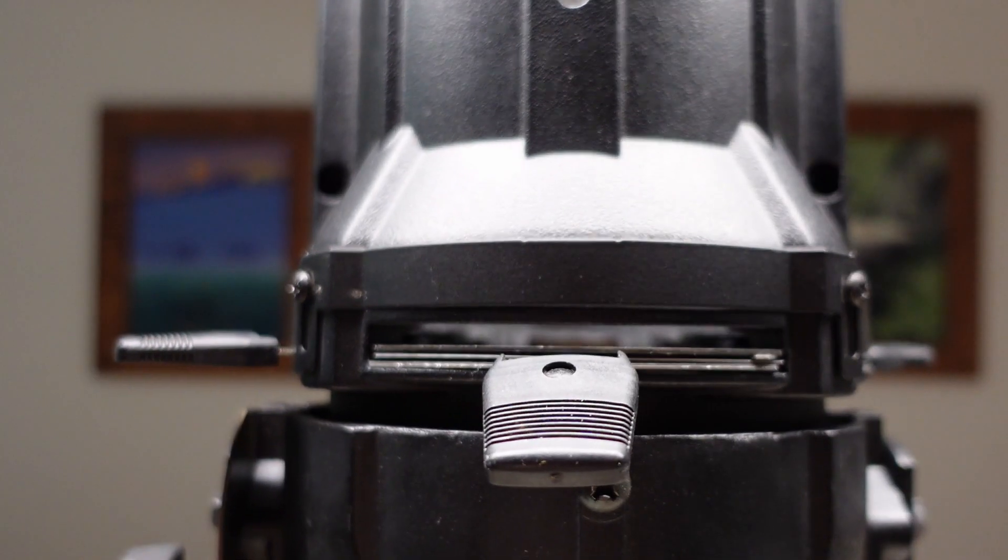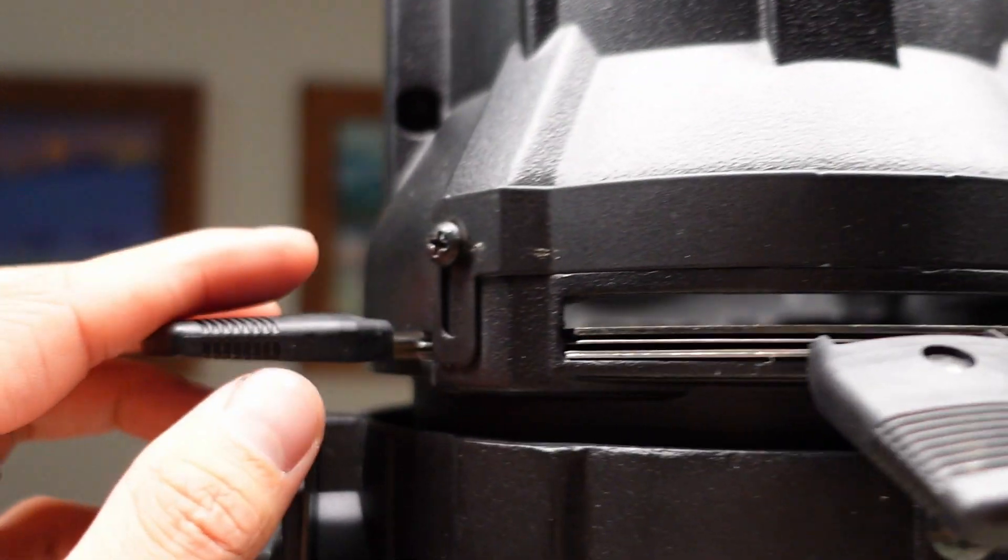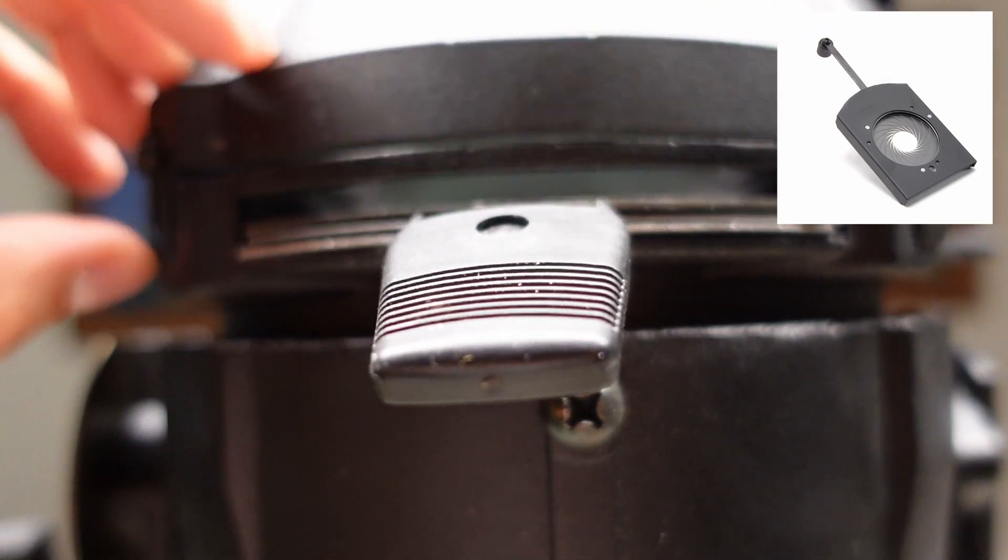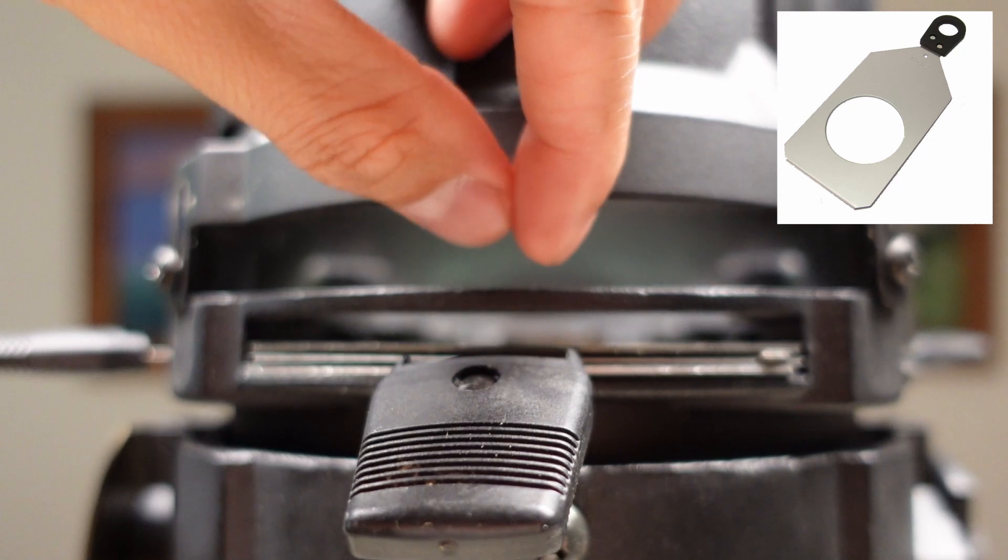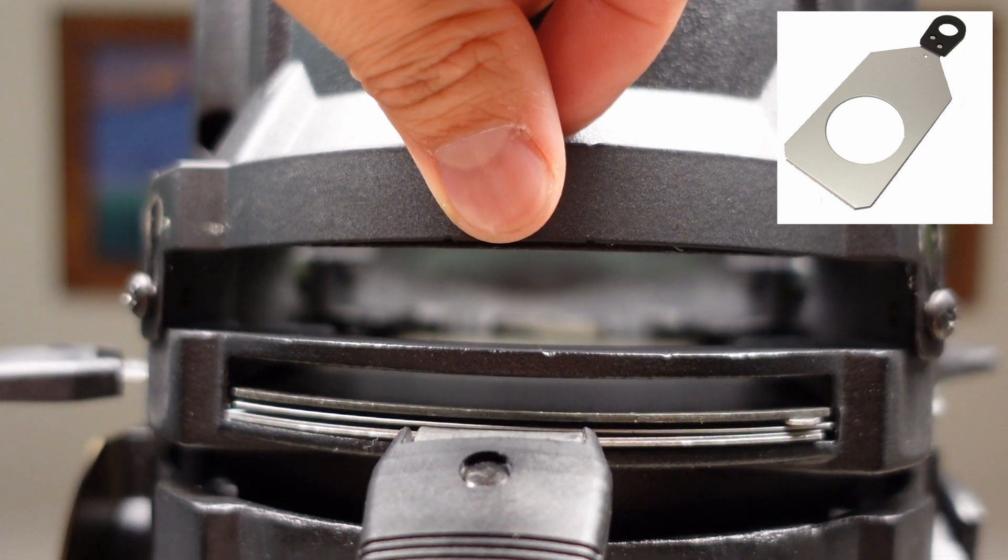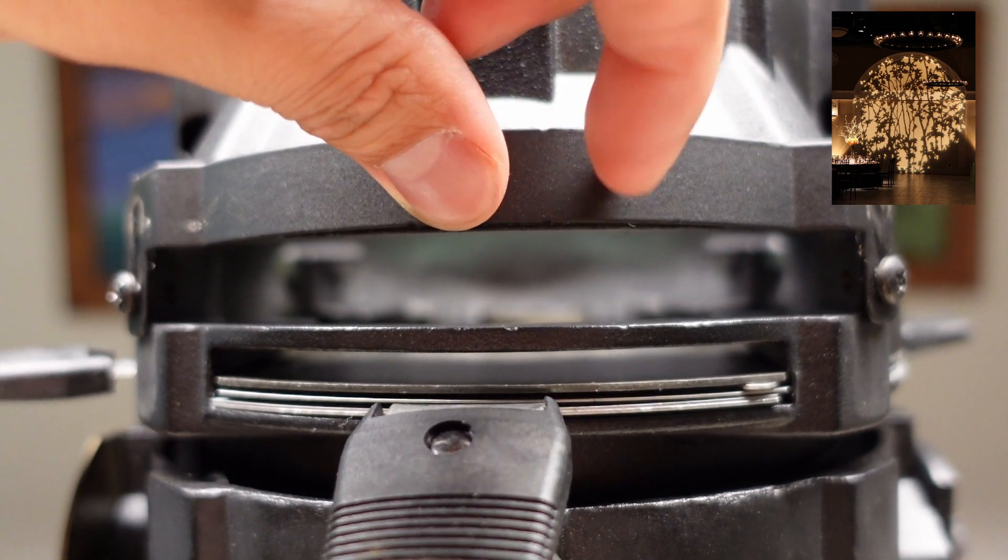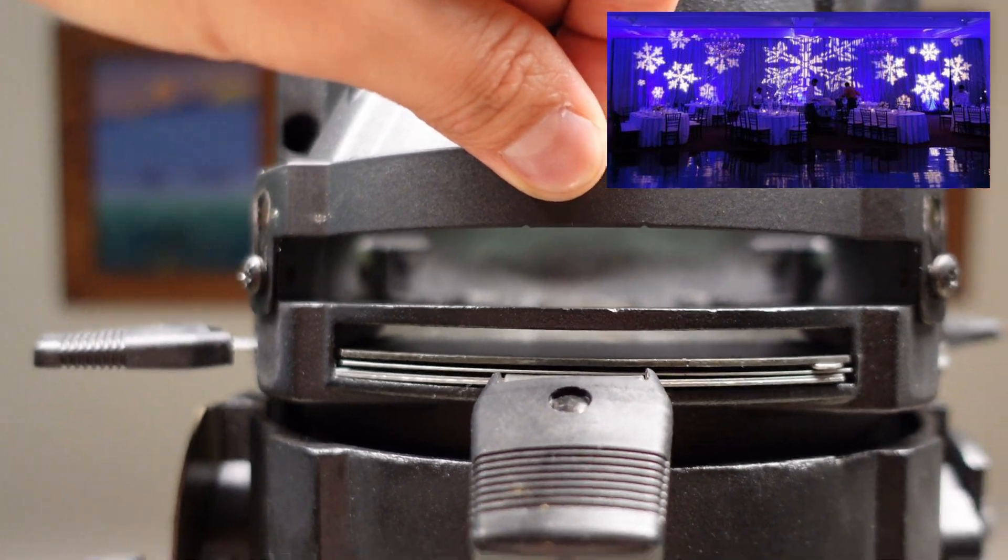The Leko barrel has two different slots: one for the iris and one for the gobo. The slot that you need to unscrew to open is where the iris would be, and the iris is used to shrink the circle of the light. The slot that's already exposed is for the gobo, where you can put in your patterns. Just be mindful that the lens will make everything upside down and inverted, so adjust to that when putting in the gobo.